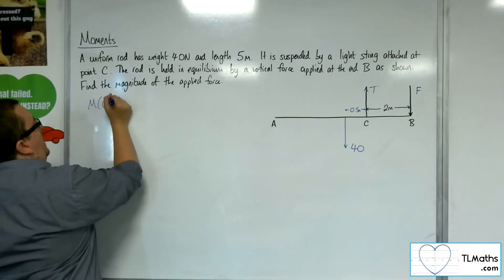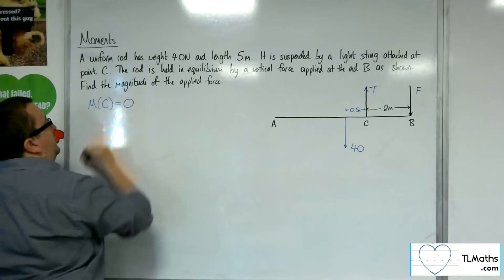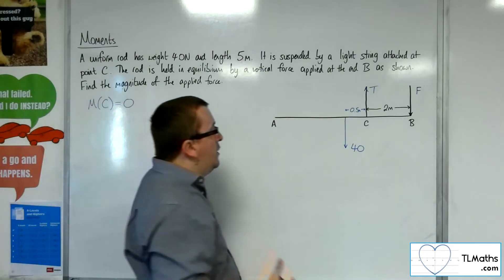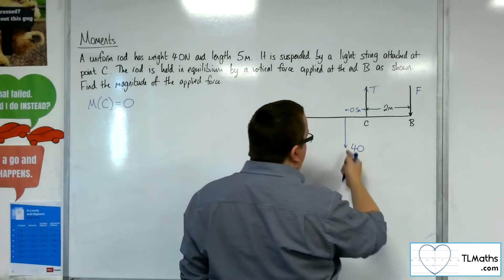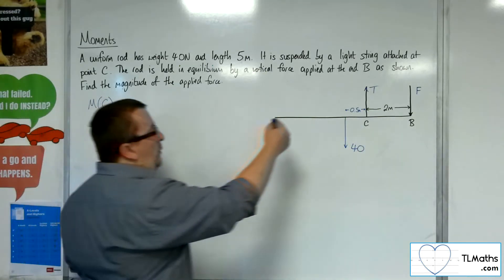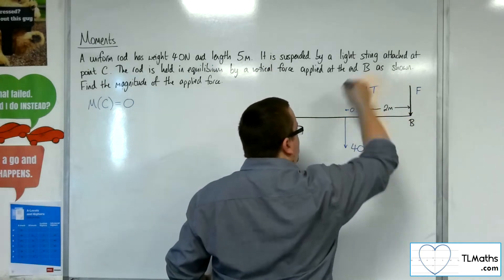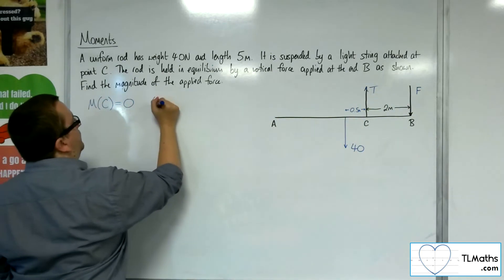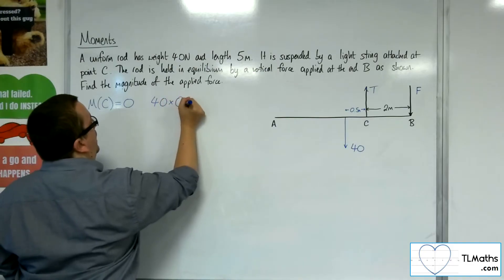So if I take moments about C, because it's in equilibrium, they've got to add up to 0. So what have I got? Well, I've got the weight, the 40 newtons, which is working in an anti-clockwise direction. So we've got 40 times half a metre away,